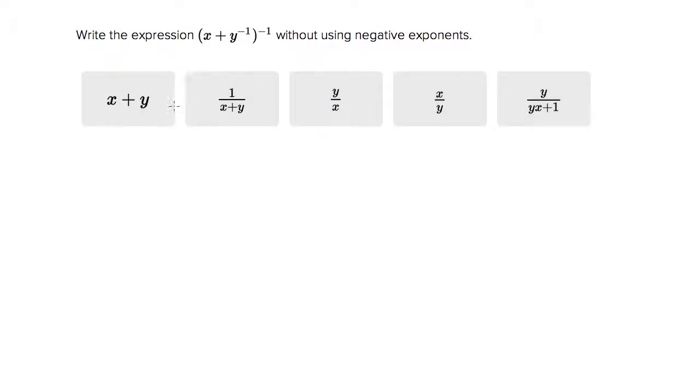This is the real Tom Rose, and they're asking us to write this expression without any negative exponents. So what trick can you use to get rid of negative exponents?